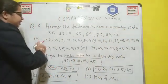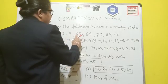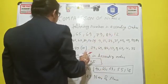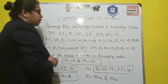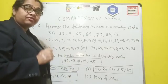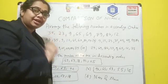So the number is given as 35, 23, 9, 65, 69, 79, 84, and 12. So as I have told you, for the ascending order, you have to start from the minimum number to the maximum, or from the lowest to the greatest.